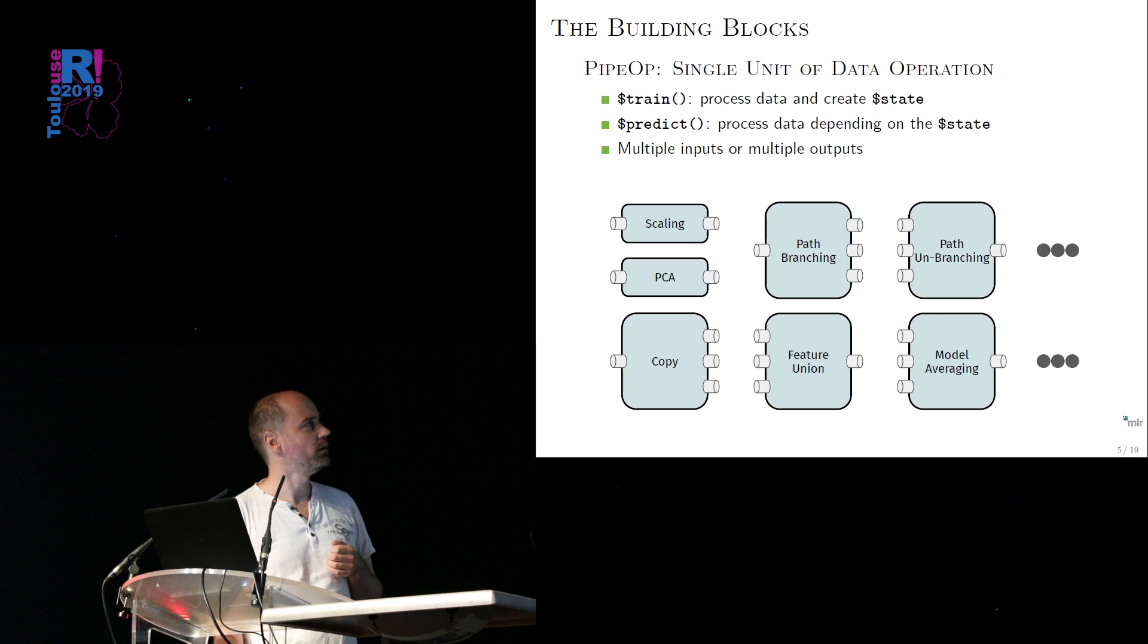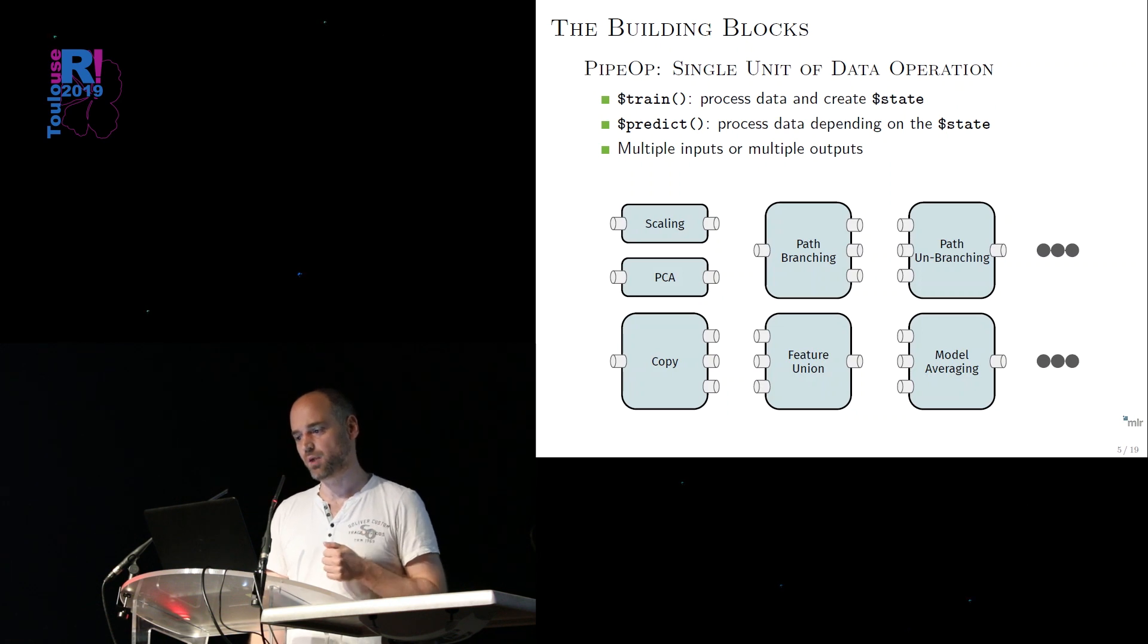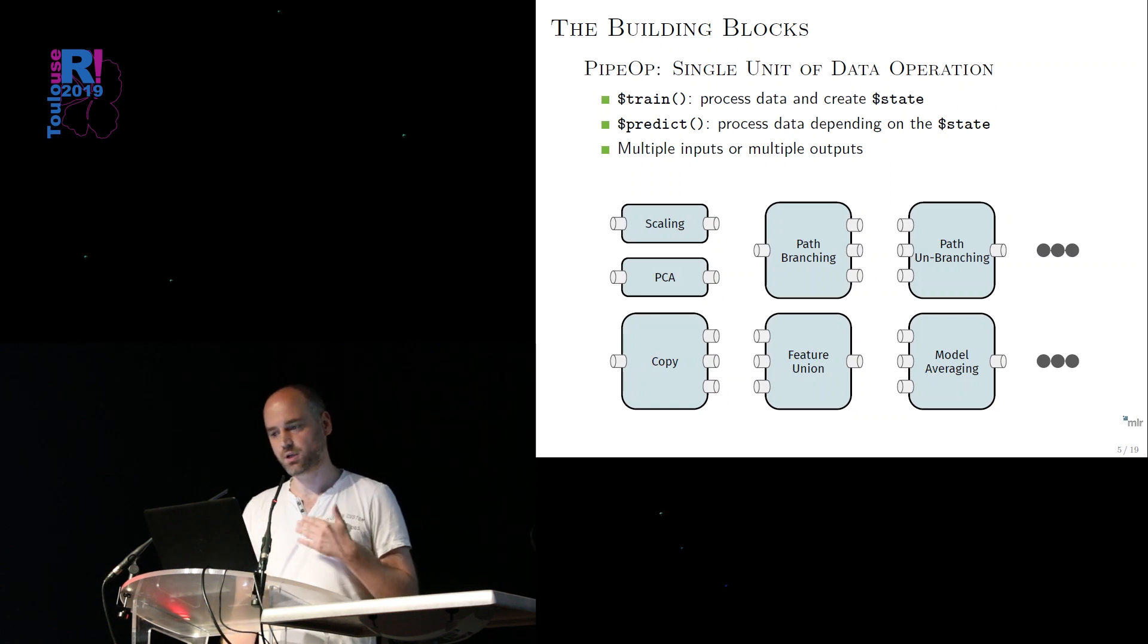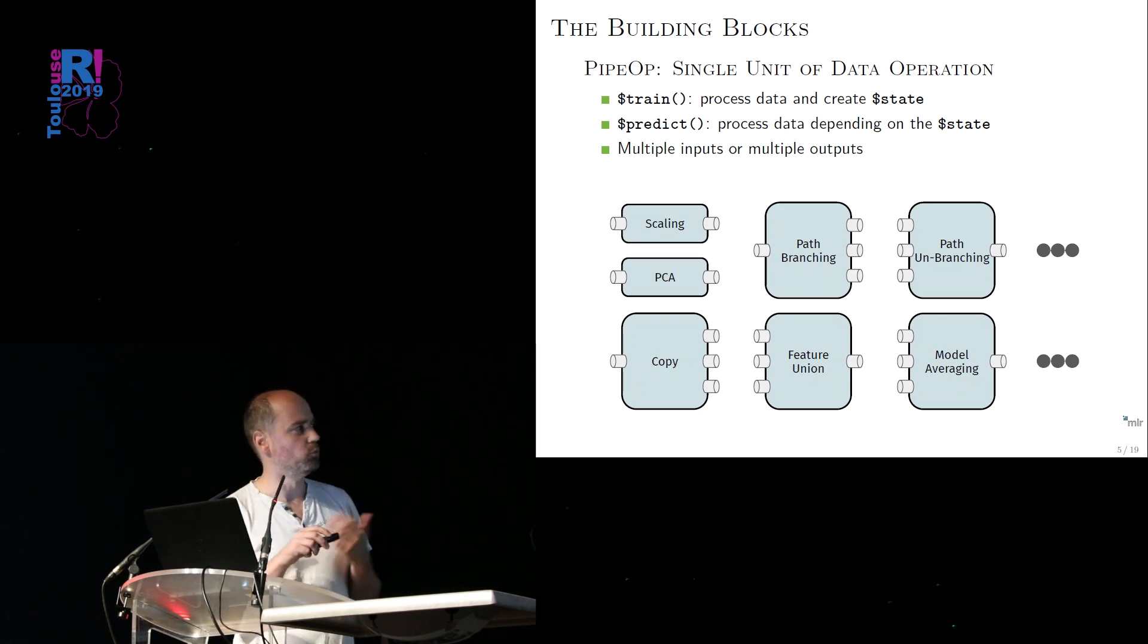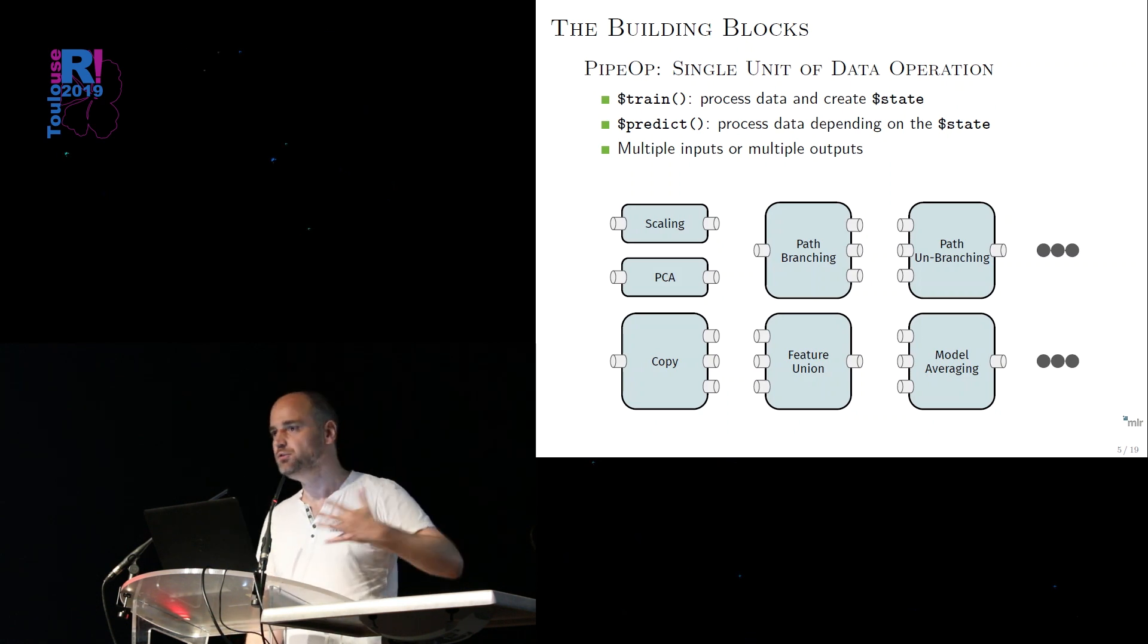There are often in MLR3 pipelines these linear one input socket, one output socket types of operations, and these give then naturally rise to linear pipelines. But there's more complex meta stuff in there, like copying operators or feature unions, path branching, and so on. And some of these have multiple input sockets or multiple output sockets. And this is what gives rise at the end to potential graph structures. I think maybe for now the feature union is maybe the most simple to explain. So multiple data tables go in, they get joined, and you have like a joint view, joint representation of your data after different types of feature extractions or preprocessing operations.